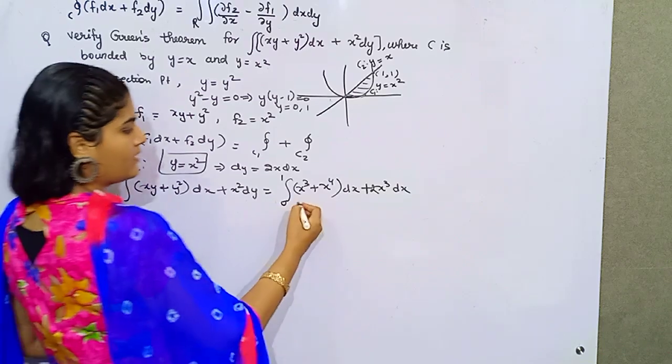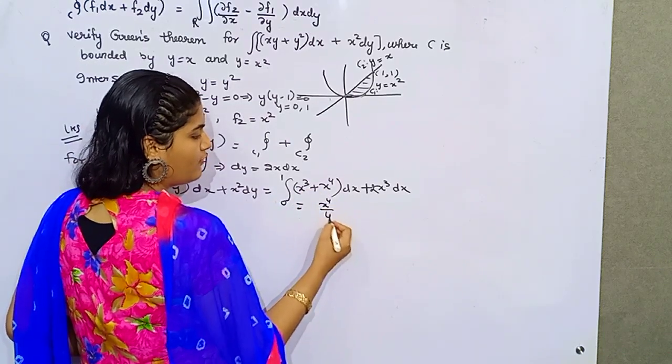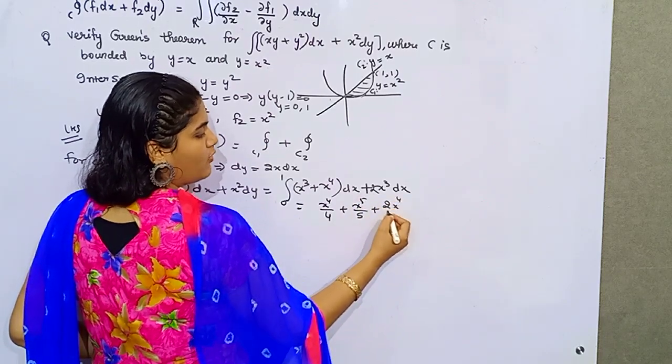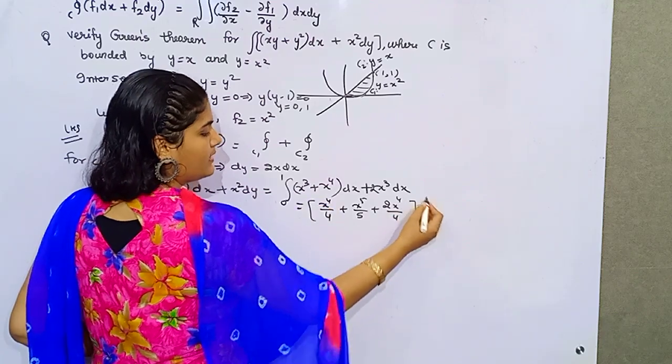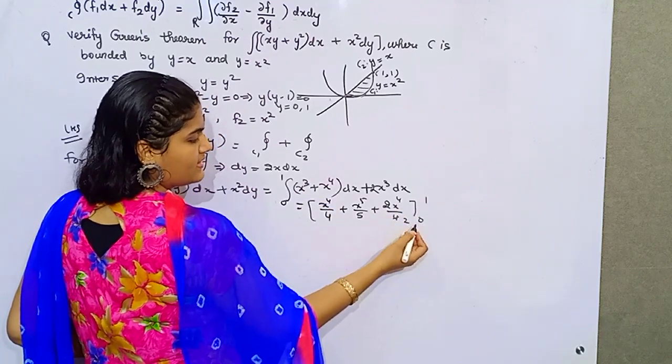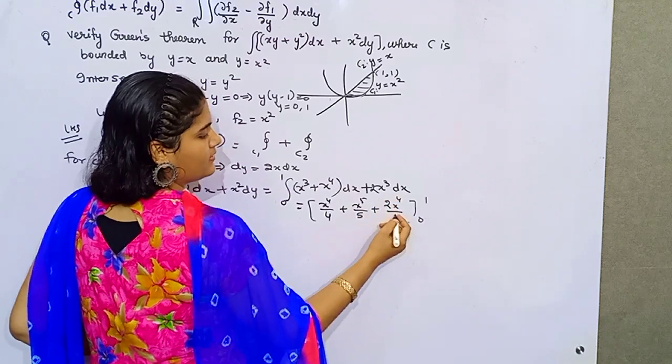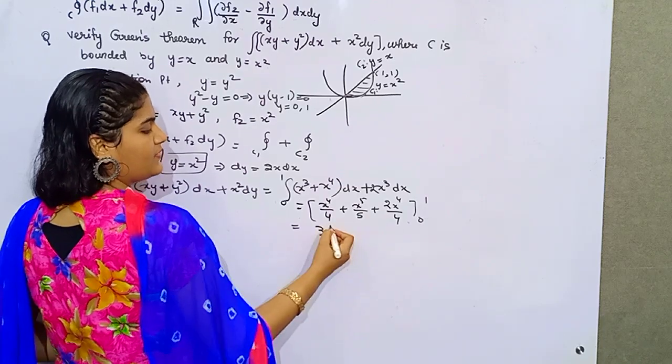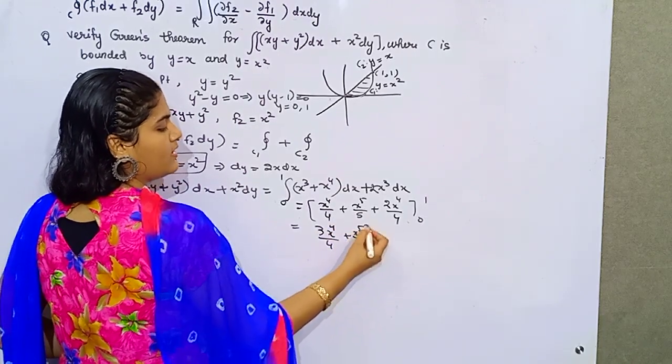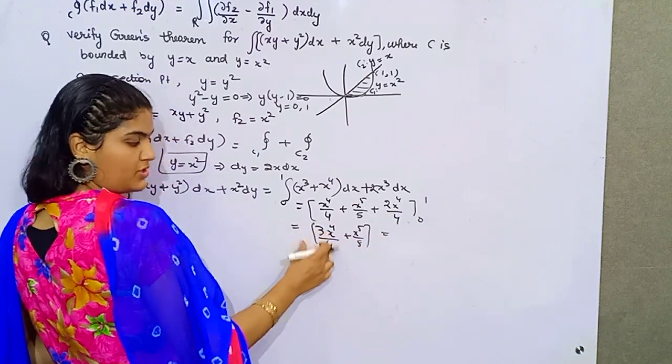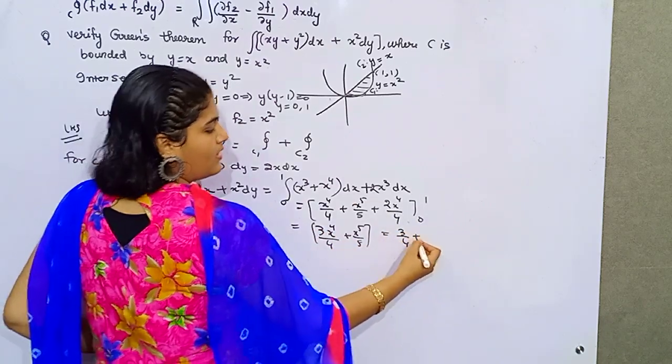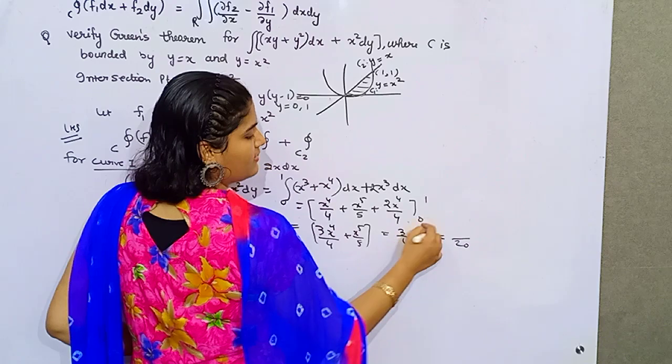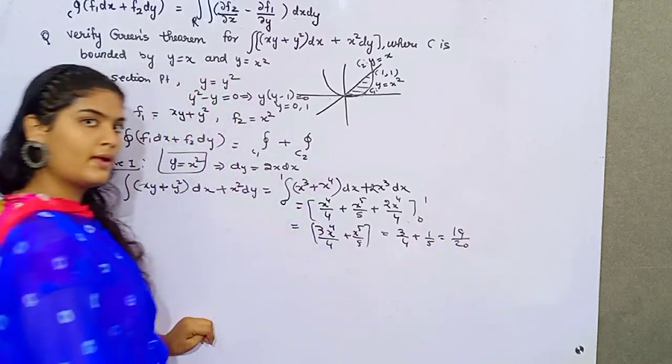Now open this. You know how to integrate this: x raised to power 4 by 4 plus x raised to power 5 by 5 plus 2x raised to power 4 by 4, from 0 to 1. You can cancel this. It would be easier if you simply add them up: 3x to the 4 by 4 plus x to the 5 by 5. On putting 1 here, 3 by 4, upper limit minus lower limit, 1 by 5. The LCM is 20, giving 15 and 4, so 19 by 20.